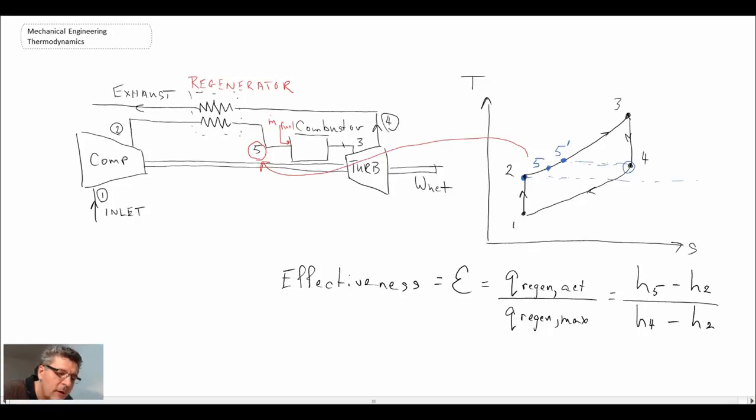The effectiveness is quantified as being h5 minus h2, which is going from here to here on our TS diagram. That would be the actual amount of enthalpy gain of the fluid through the heat exchange process, divided by h4 minus h2, which would be going from here to here. That would be the maximum possible that we could attain. So that is the effectiveness of the regenerator.